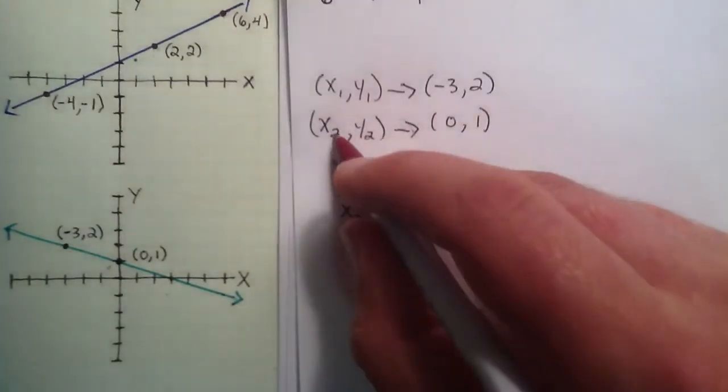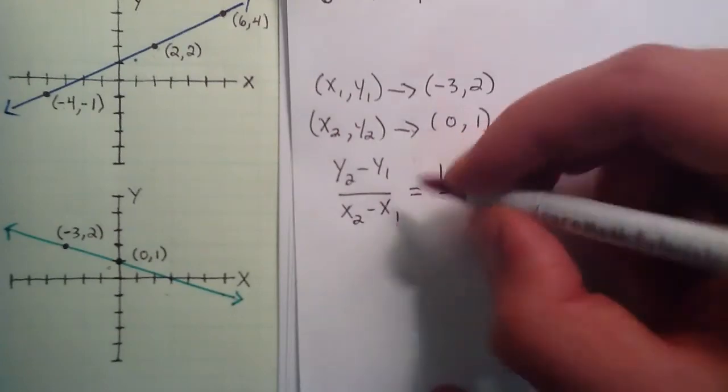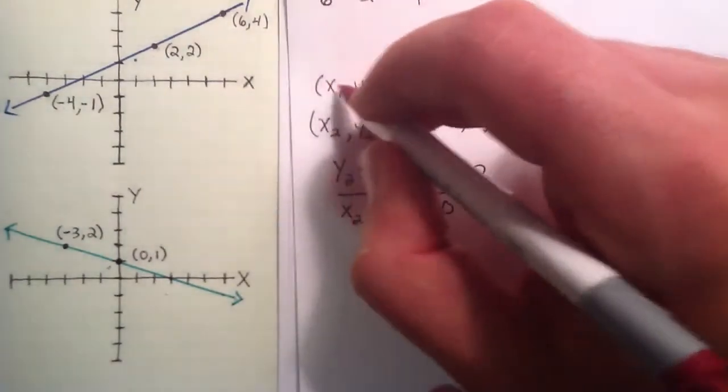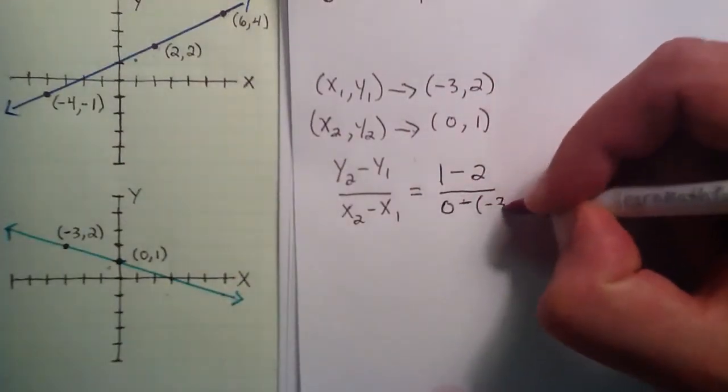And then x2 minus x1 is simply the left hand side of this point, 0, minus the x1, and the x1 is the left hand side of that point. This would be minus a negative 3.